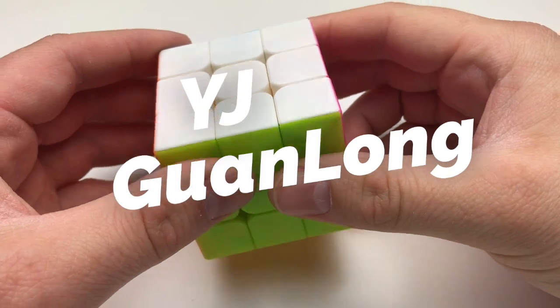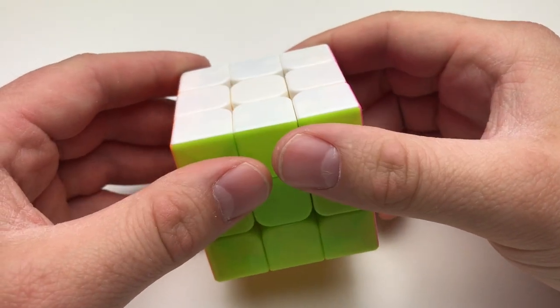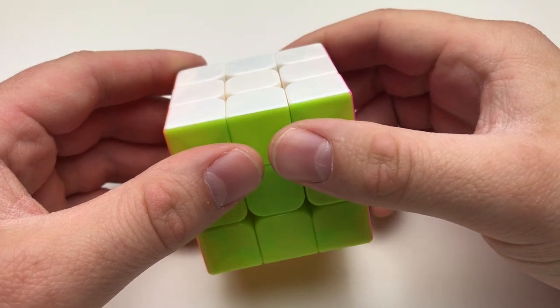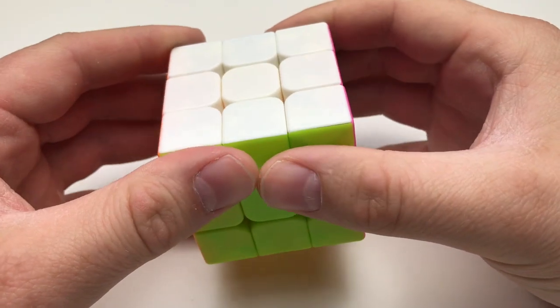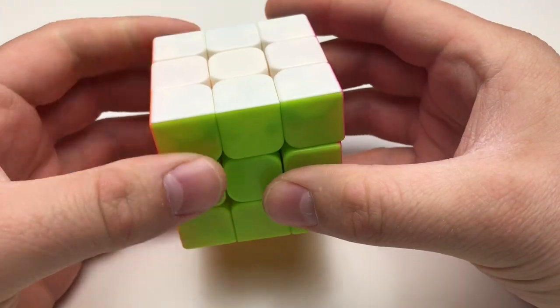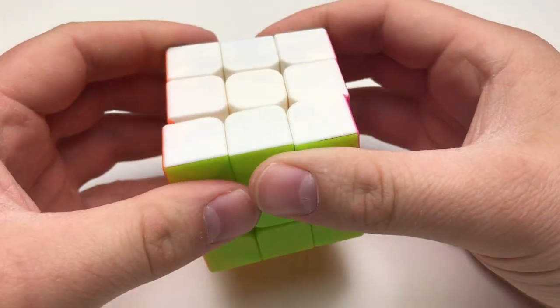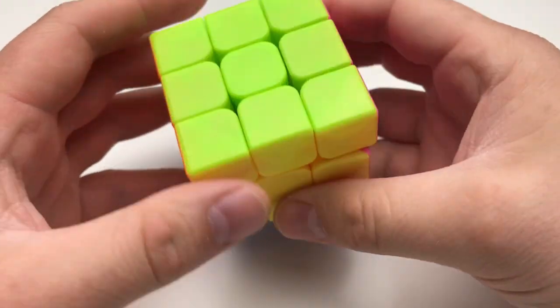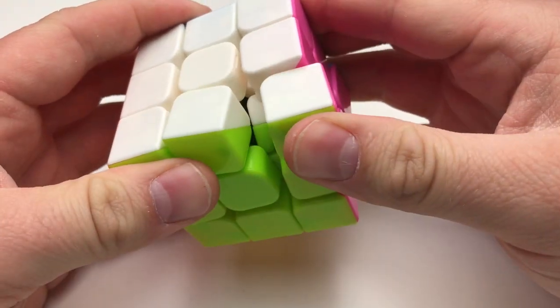All right, so lastly here I have the YJ Guanlong. So this is the puzzle I used for my Cosmic Lube Set Comparison video. On that video, I used the stickered puzzles, and though I did that video with those stickered puzzles, I'm not comparing those to the rest. I have here the Stickerless Cube that doesn't have any lube or tensioning adjusted. The piece separation is good.